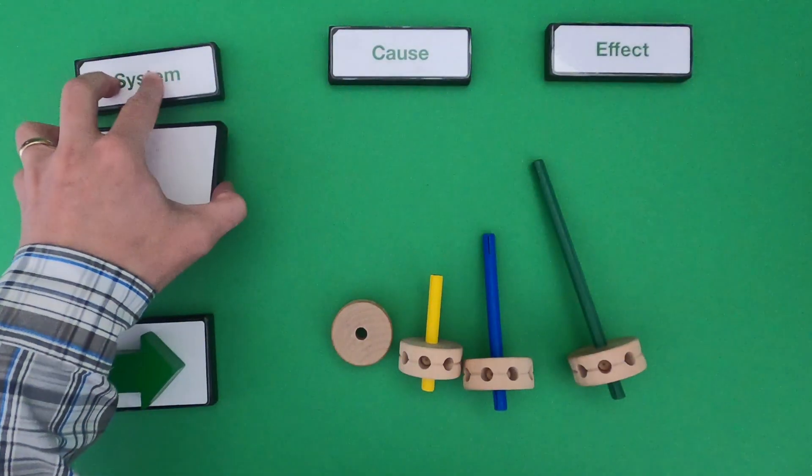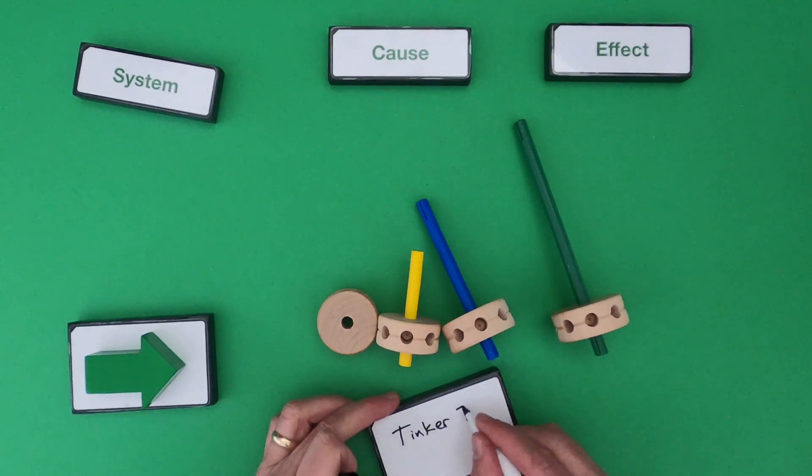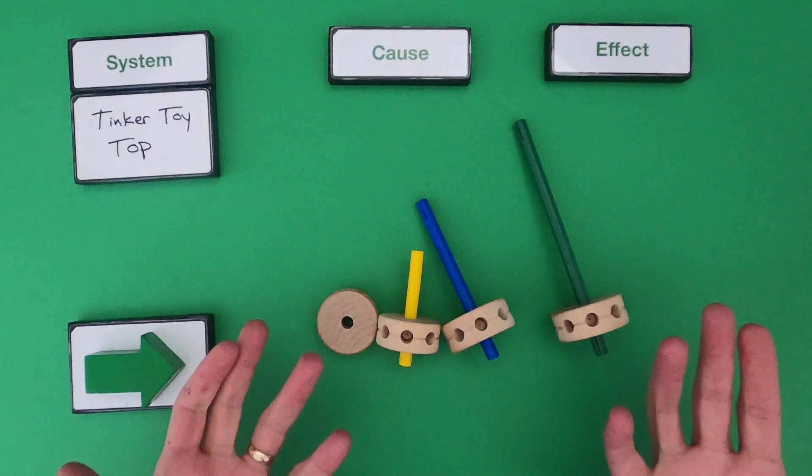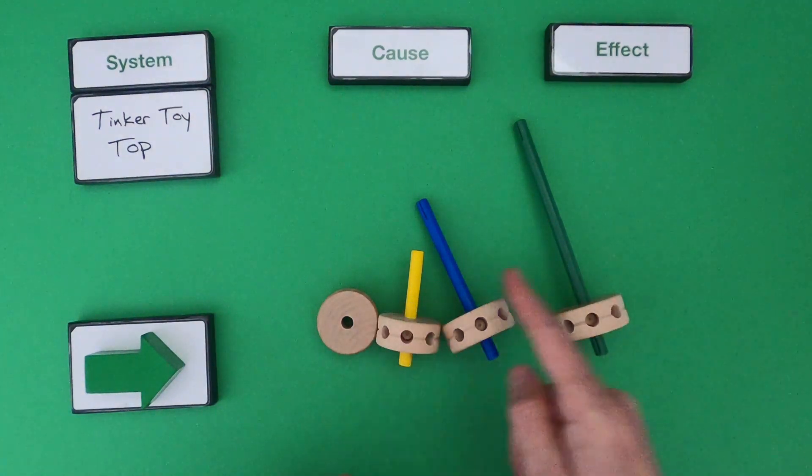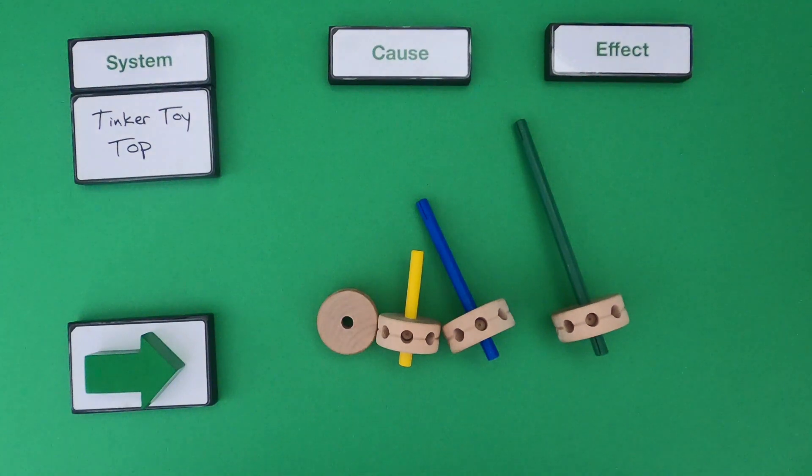Okay, for the second object we're going to study the following system. You can see the system is going to be these tinkertoy tops. What we're going to study is how does the length of the stem affect the time of spinning? So could you take a second, pause the video, fill out the cause and effect with relationships organizer, and then unpause the video and we'll see how our ideas kind of sync up.